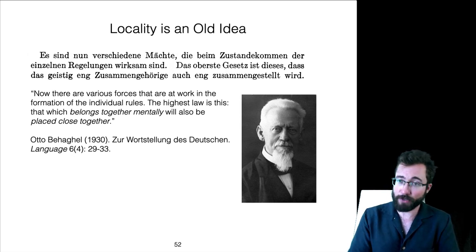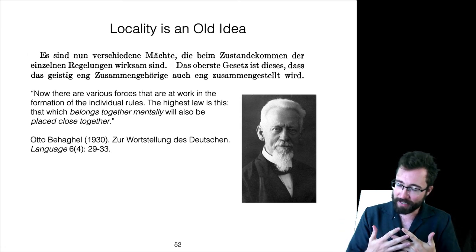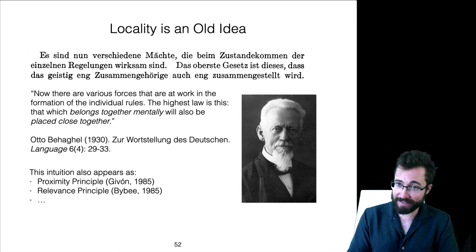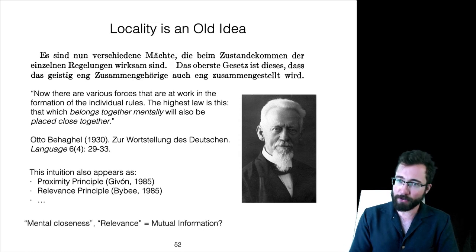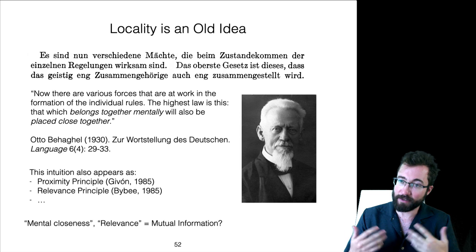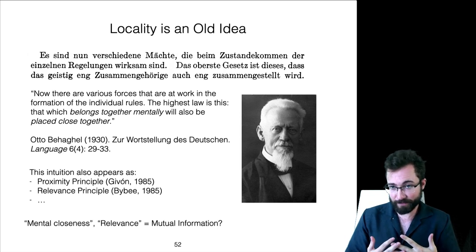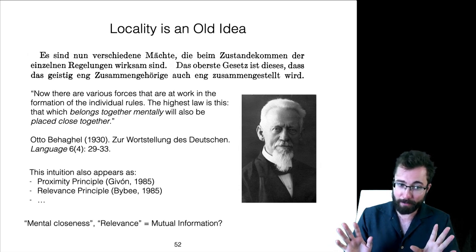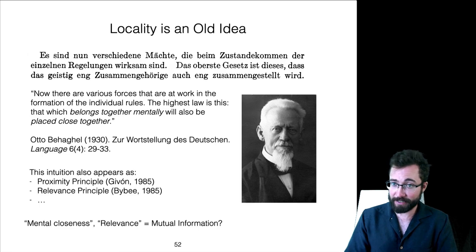Now, this is taken as a precursor of dependency locality, but I think it's really much more general. So what does it mean for things to belong together mentally? That's a bit vague. This idea has also been restated as things like the proximity principle, the relevance principle, and the functionalist literature. I'd like to propose that these ideas of mental closeness from Behagel here, these things like relevance, these are all just mutual information. This core intuition about this underlying organizing principle of the order of elements in language might just be information locality.